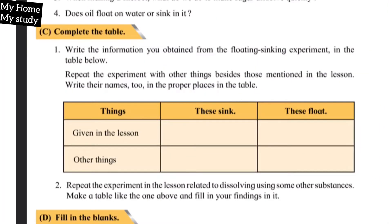C1: Complete the table. Write the information you obtained from the floating-sinking experiment in the table below. Repeat the experiment with other things besides those mentioned in the lesson. Write their names too in the proper places in the table. Here you have three columns in this table: first Things - any item to take, These sink - items that sink, These float - items that float on top. In Things, first what is given: Given in the lesson - items given in the lesson, and downside Other things.